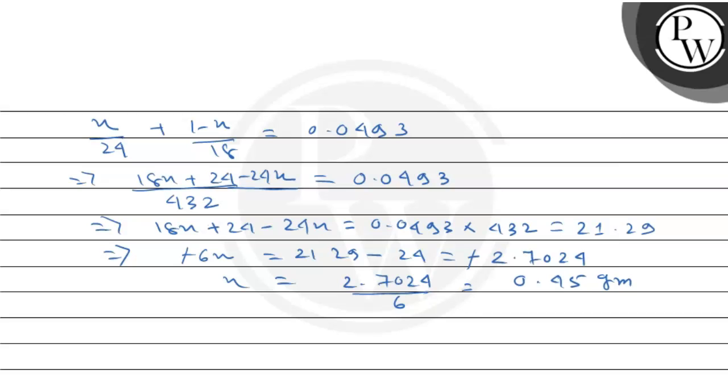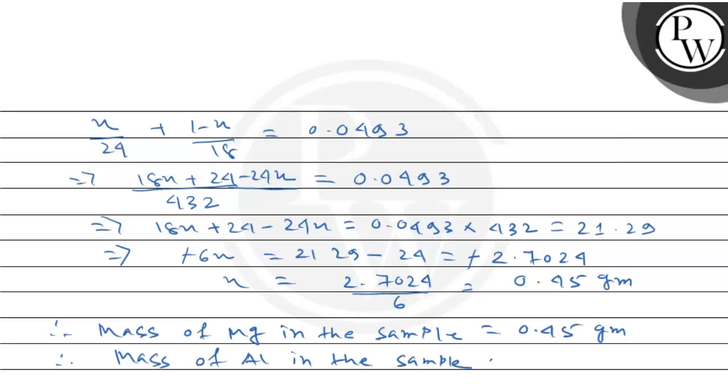So we can write now that the mass of Mg in the sample is equal to 0.45 gram. Therefore, mass of Al in the sample is 1 minus 0.45, which equals 0.55 gram. So in 1 gram of the sample, Mg's mass is 0.45 gram and Al's mass is 0.55 gram. So I hope this will answer your question. Thank you.